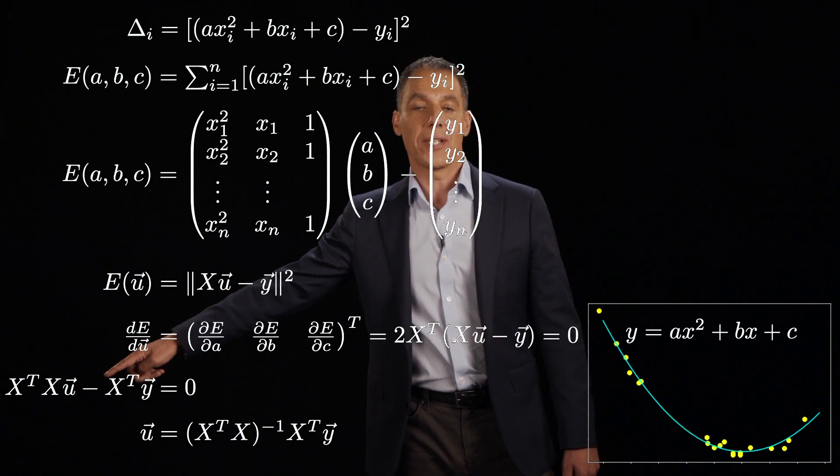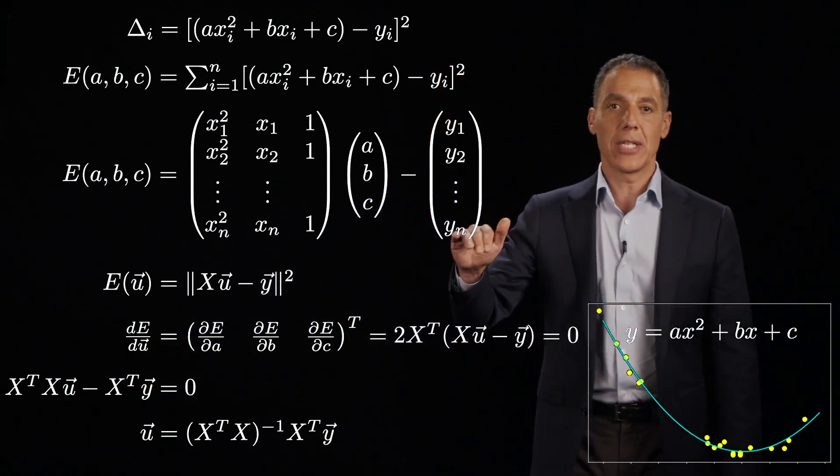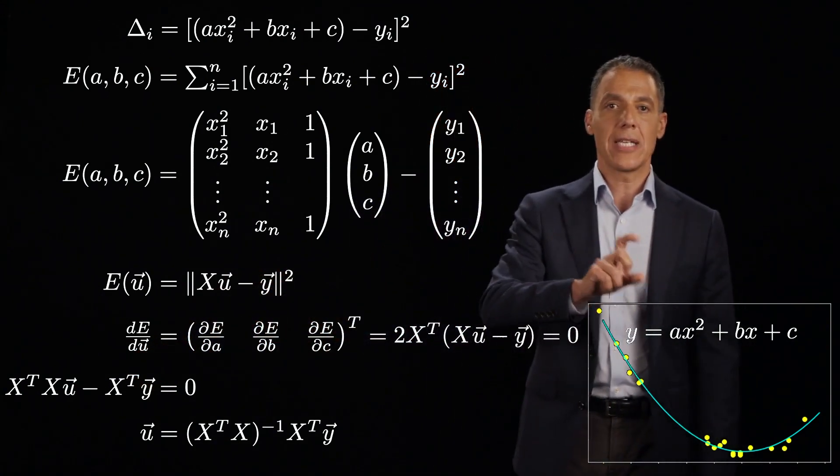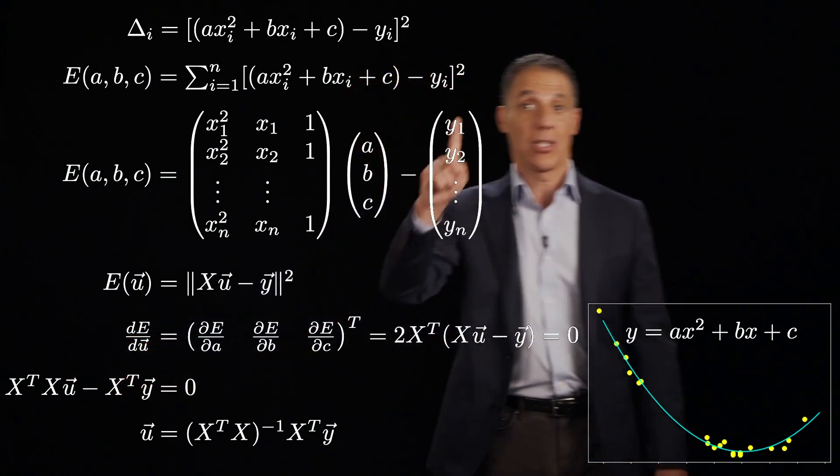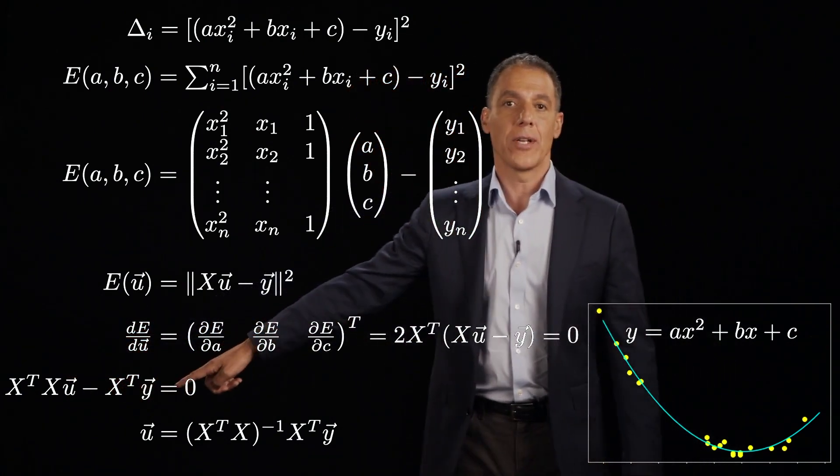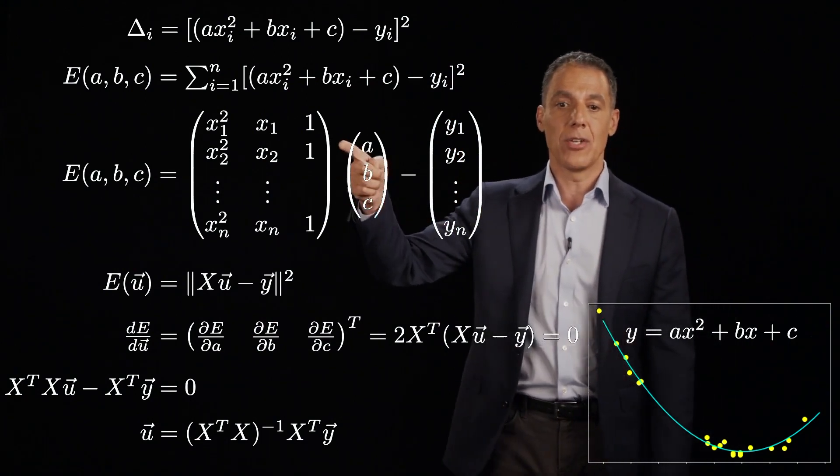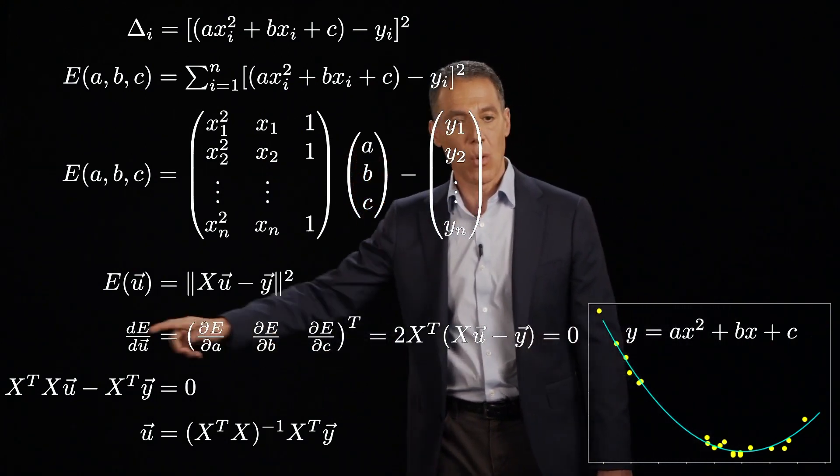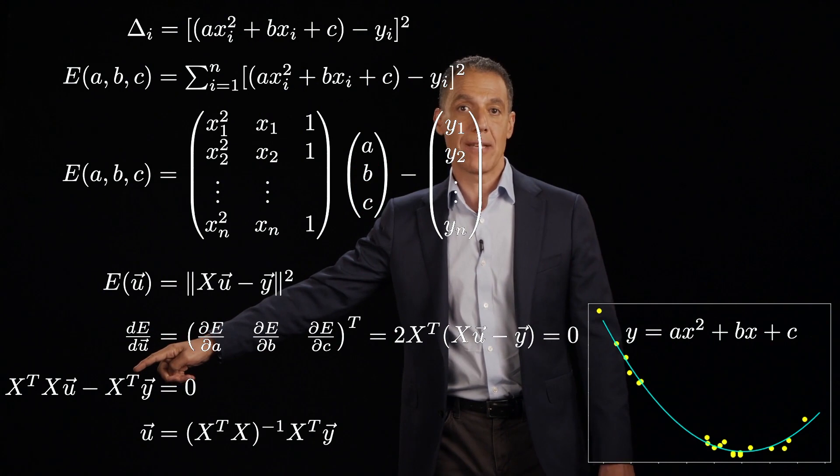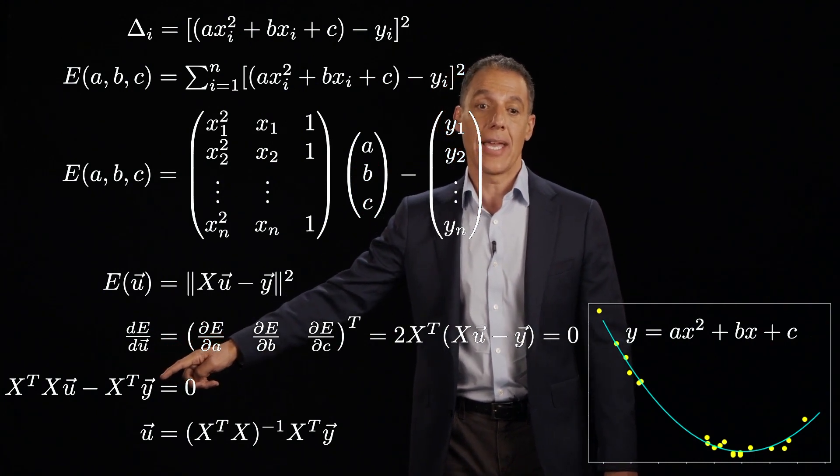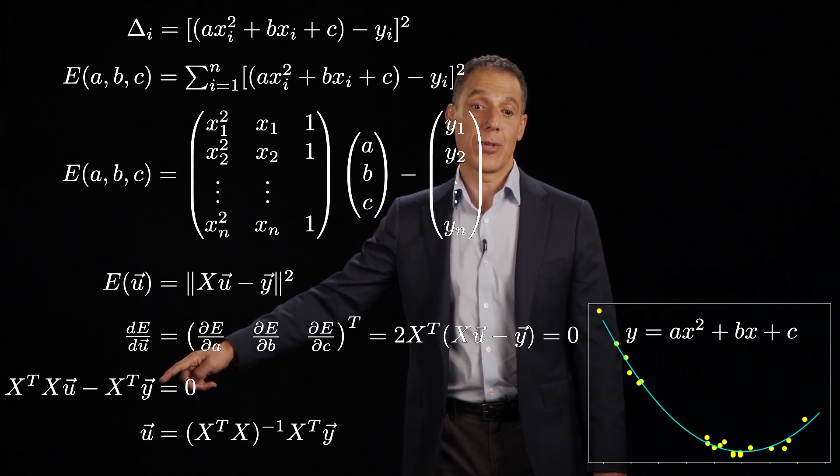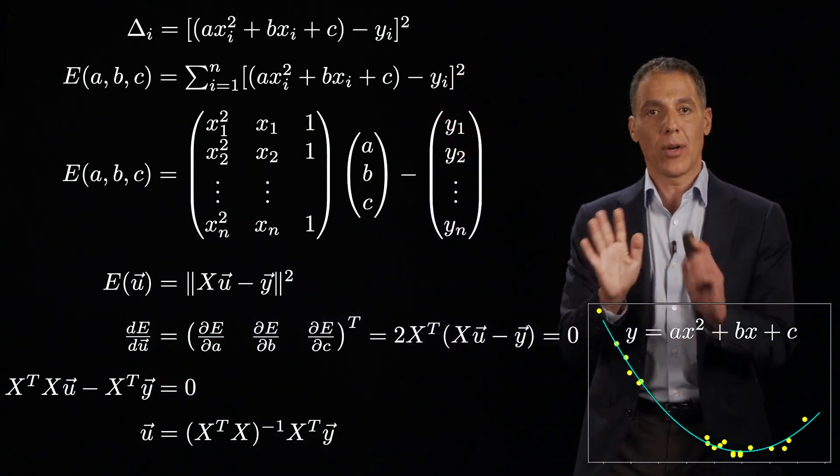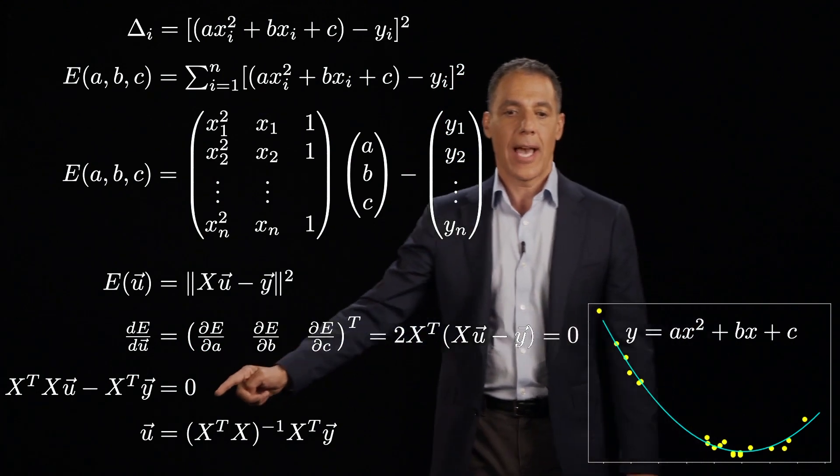All right, the two can go away because we're setting this equal to 0, so I can divide by 2. I've got X transpose X U minus X transpose Y by multiplying this out is equal to 0. All right, let's do the algebra again. What is X, N by 3, X transpose 3 by N. The product of those two is 3 by 3 matrix, square, excellent. What is U, 3 by 1, that's the unknown, of course. One more. What is X transpose, N by 3 times A, sorry, X transpose is 3 by N times an N by 1, that's going to be a 3 by 1, 3 by 1, 3 by 1, the matrix algebra works.